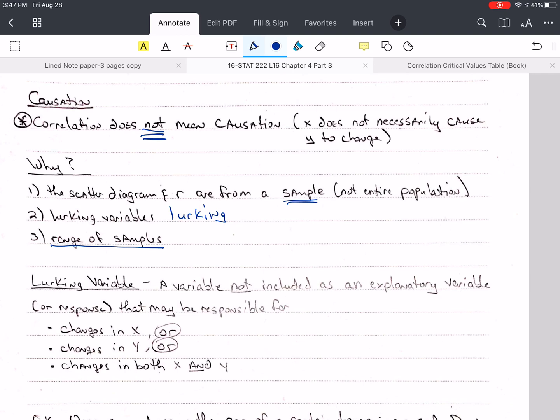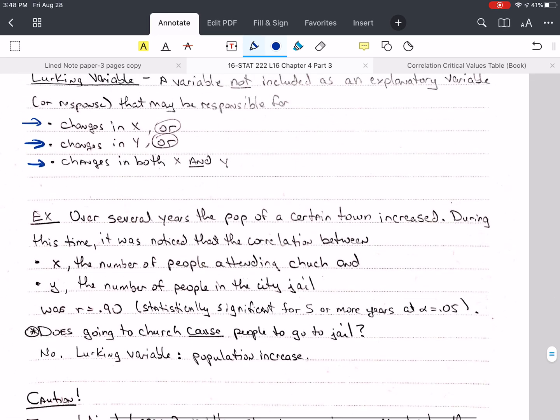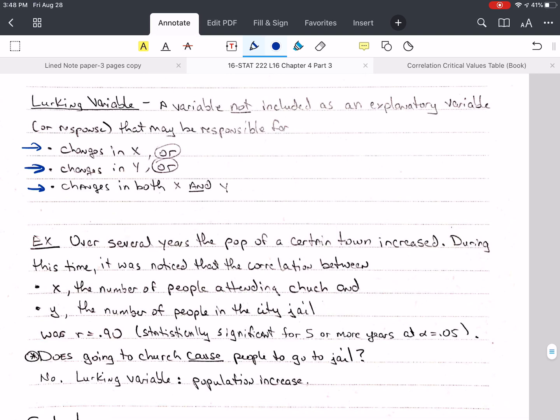So a lurking variable, it's a variable that's not included as an explanatory or response variable, either one. And it may be responsible for changes in X, or changes in Y, or changes in both X and Y. So it's not included in the study, but it may be causing an effect.